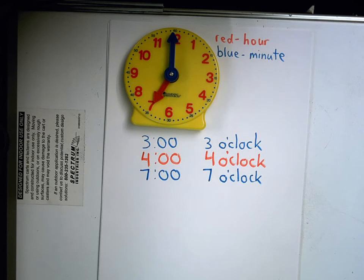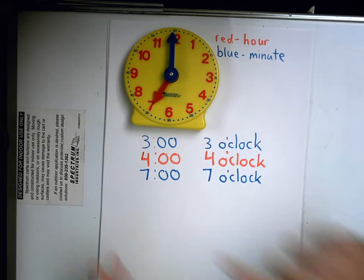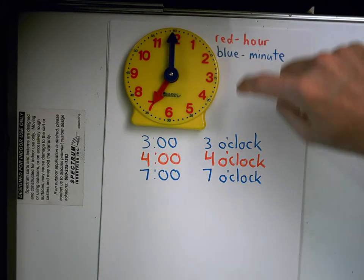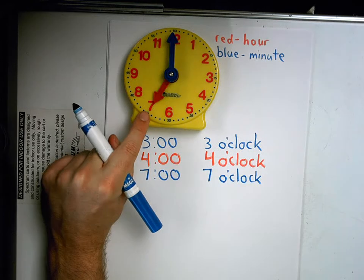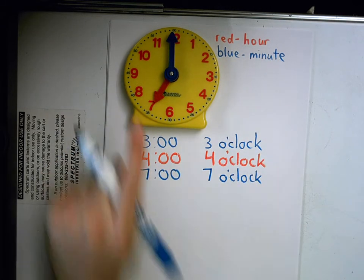Now that hour hand went over one, two, three places. Because every time the minute hand goes around once, the hour hand goes from one of these numbers to the next. It moves from one hour to the next.